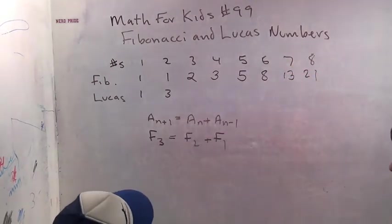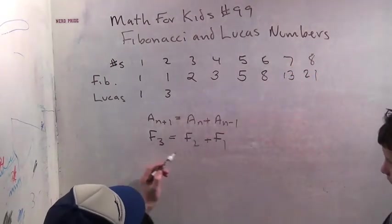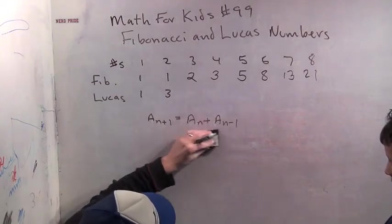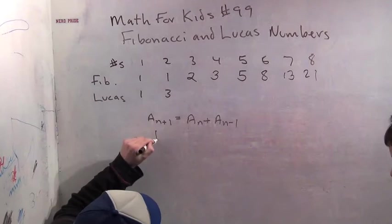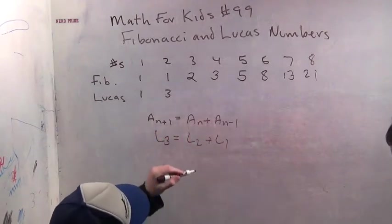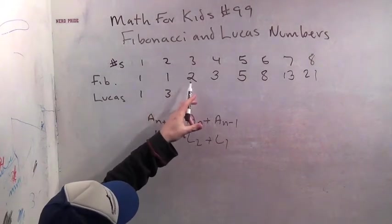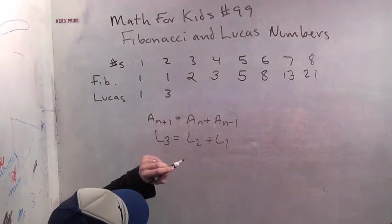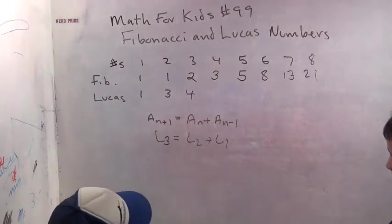And then what are the next two? 7, 13, and 21. So we've talked about that. Now let's do the Lucas numbers. They follow the same pattern. So I'll say Lucas number 3 equals Lucas number 2 plus Lucas number 1. So Lucas number 3 is Lucas number 2 plus Lucas number 1, which is 4.